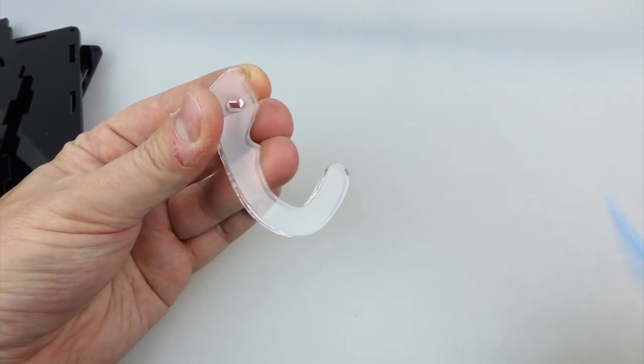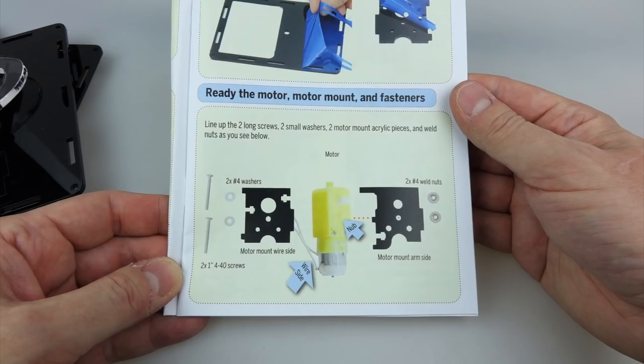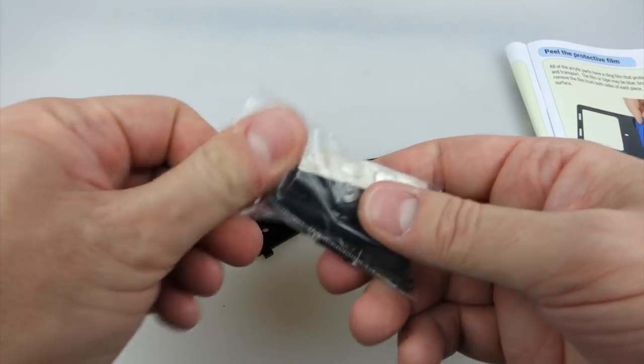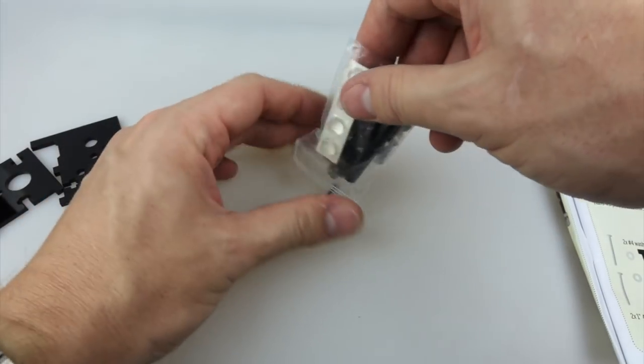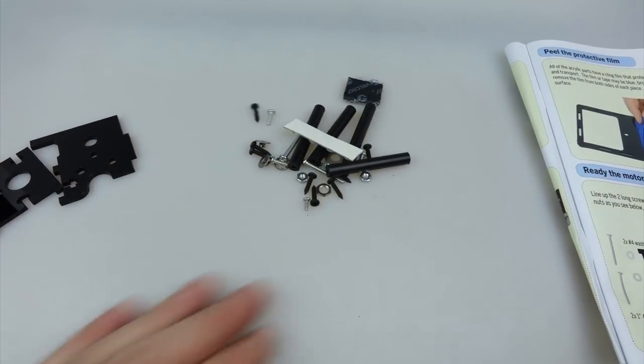Hold on, one more piece. I forgot the thingamajig. Now first step we're going to put the motor on these little bracket things here. So we'll need the screws out of this bag so let's tip all this stuff out and see exactly what we've got.